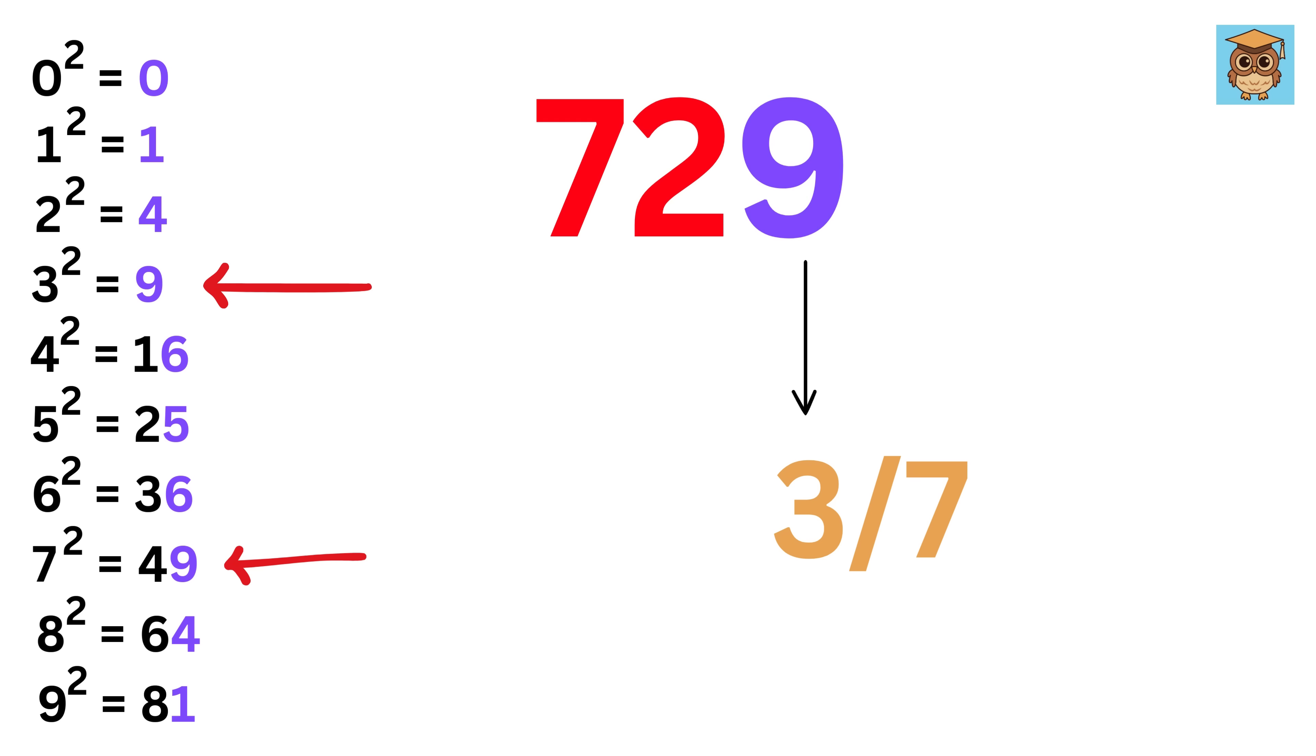Now, as we did before, cross out the last two digits, and then we want a square which is just below or equal to 7. It is this 4, which is 2 square. So, write 2 here. Hence, our answer will be either 23 or 27.